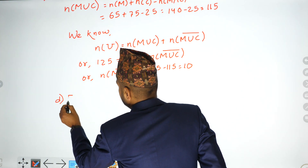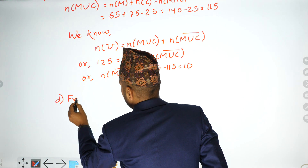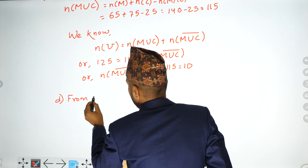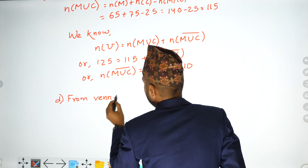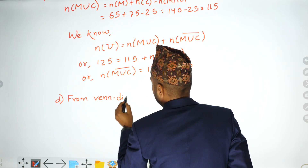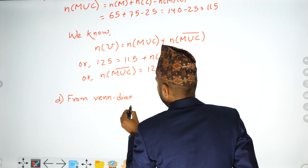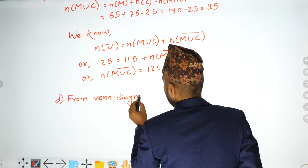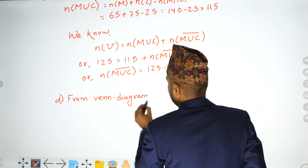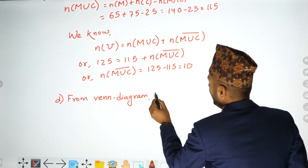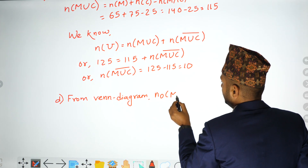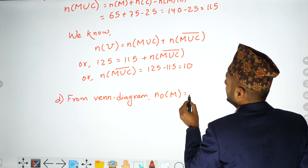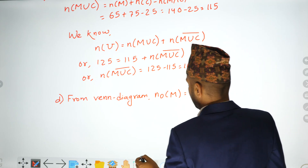From the Venn diagram: students with only mobile (M not C) = 40.